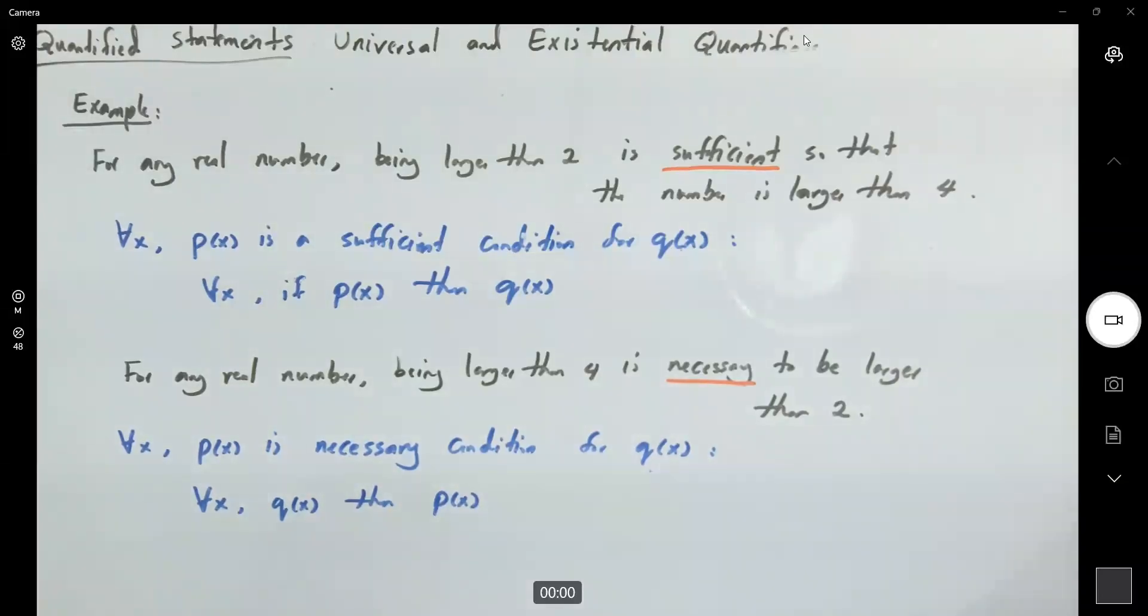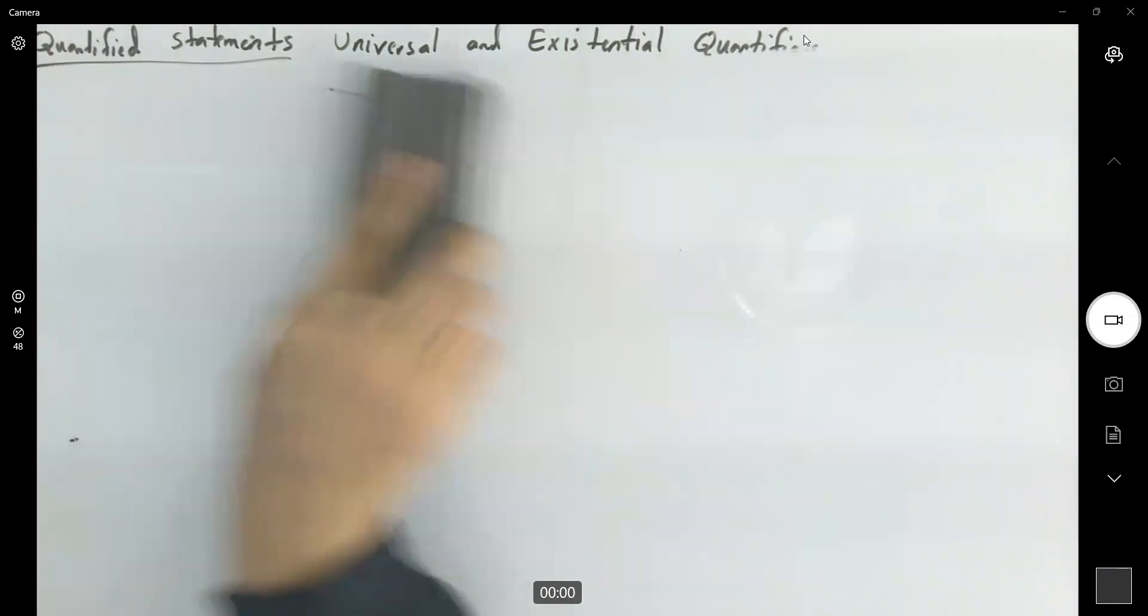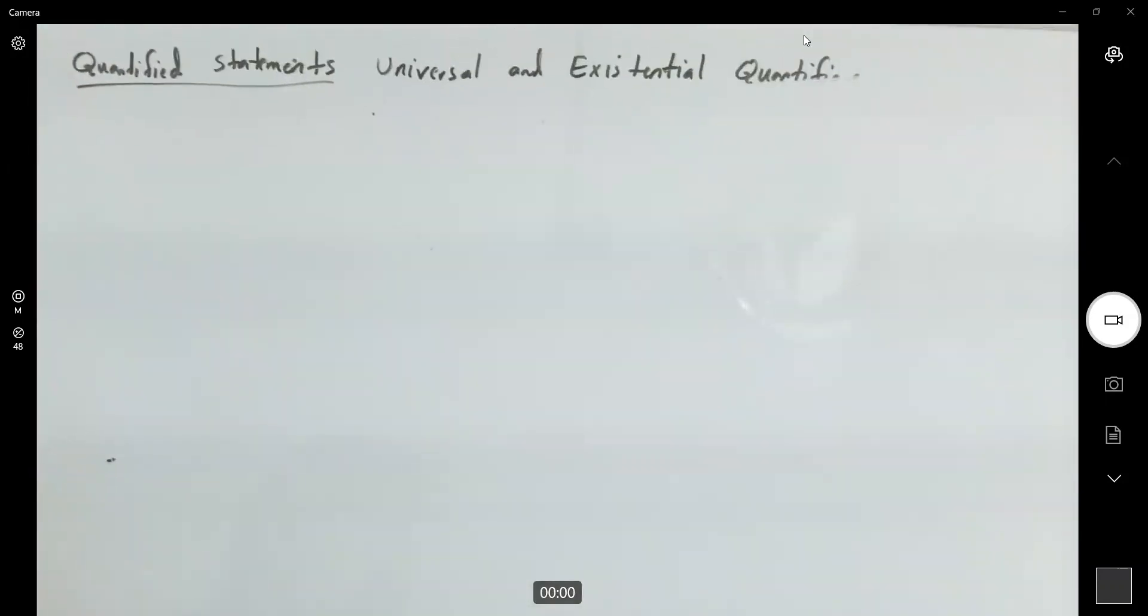Let's take a look at multiple quantifiers. Sometimes we need to use both quantifiers, the universal and existential, in a statement.